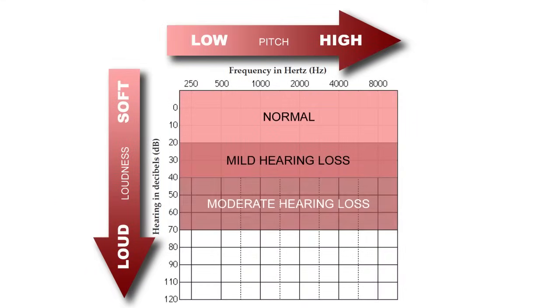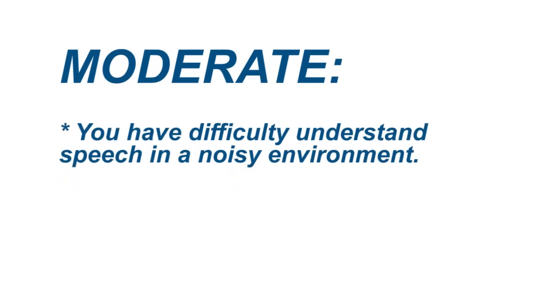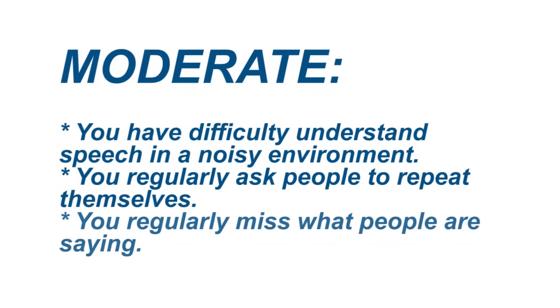Moderate hearing loss will be marked in the 40 to 70 decibel range. With moderate hearing loss you will frequently have difficulty understanding speech in noisy environments, including the telephone, television, and public gatherings. You may find that you are regularly asking people to repeat themselves and you get frustrated because you are missing what they are saying. People may also tell you that you speak too loudly in conversations.